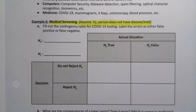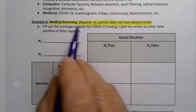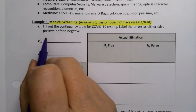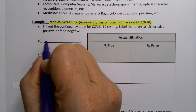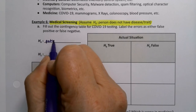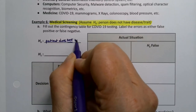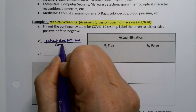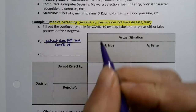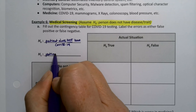We're going to fill out the contingency table for COVID-19 testing, labeling our errors as either false positive or false negative. Starting with our null and alternative hypotheses: the null hypothesis is that the patient does not have COVID-19, and the alternative hypothesis is that the patient has COVID-19.